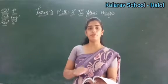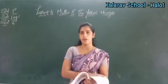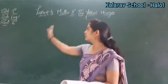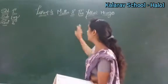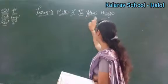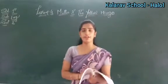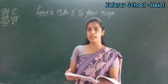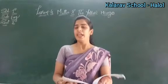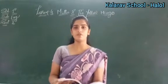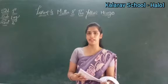So in the previous class we have started our lesson number 4. So what was the story? Me Too and a yellow mango. Who was Me Too? We have already learned. Me Too was a parrot. He loved to eat mangoes very much.